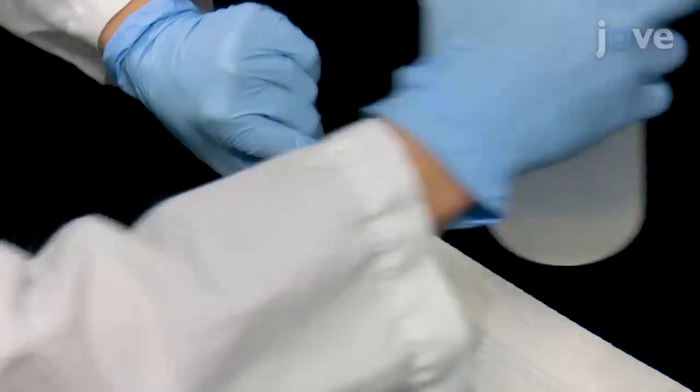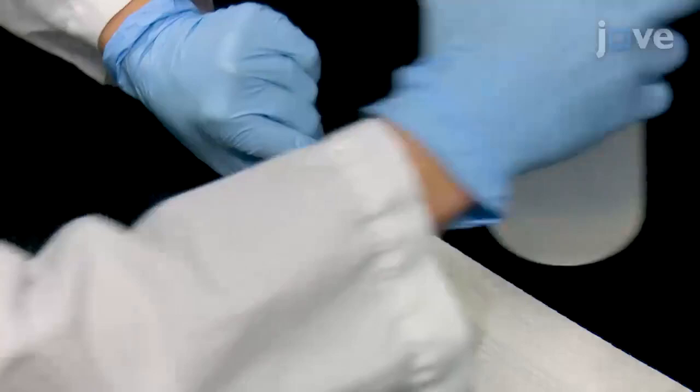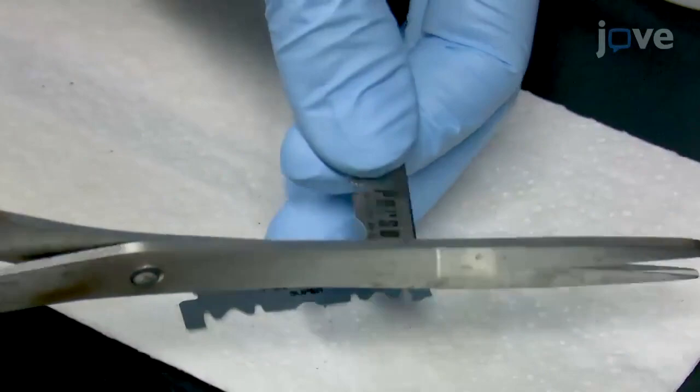Now, prepare the blades. First, clean a double-edged razor with ethanol and allow it to air dry. Then use scissors to cut it into approximately one centimeter pieces.